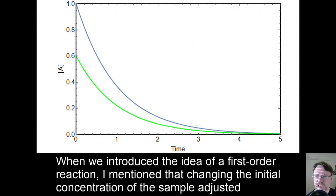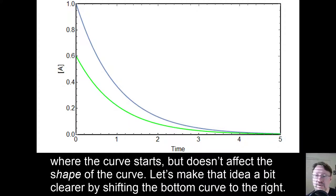When we introduced the idea of a first-order reaction, I mentioned that changing the initial concentration of the sample adjusted where the curve starts, but doesn't affect the shape of the curve. Let's make that idea a bit clearer by shifting the bottom curve to the right.